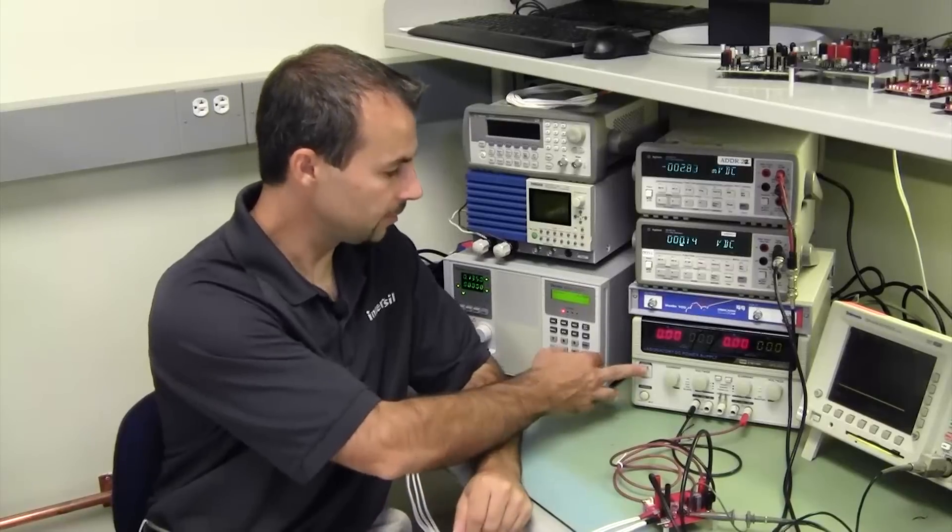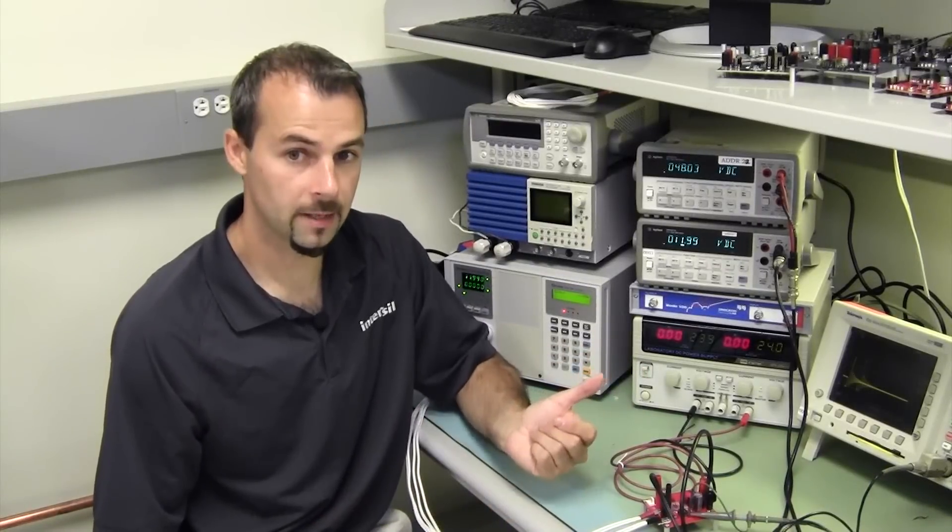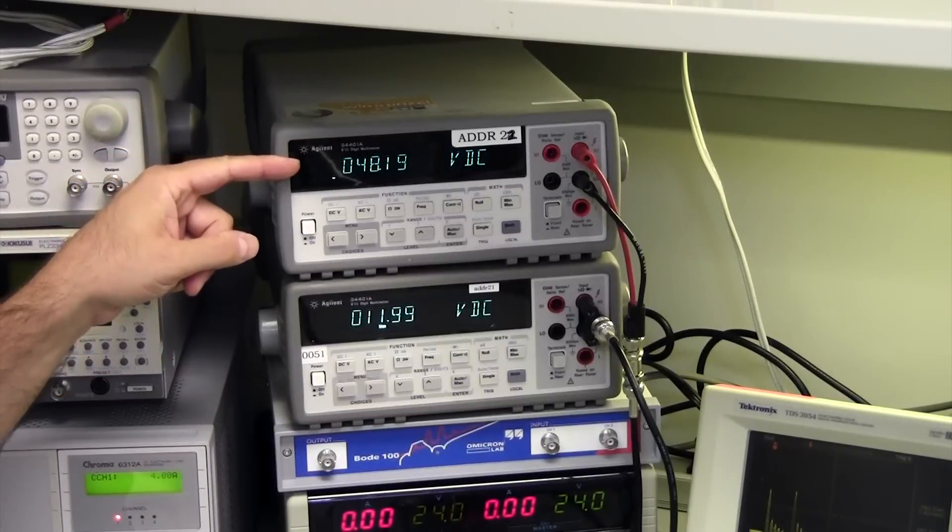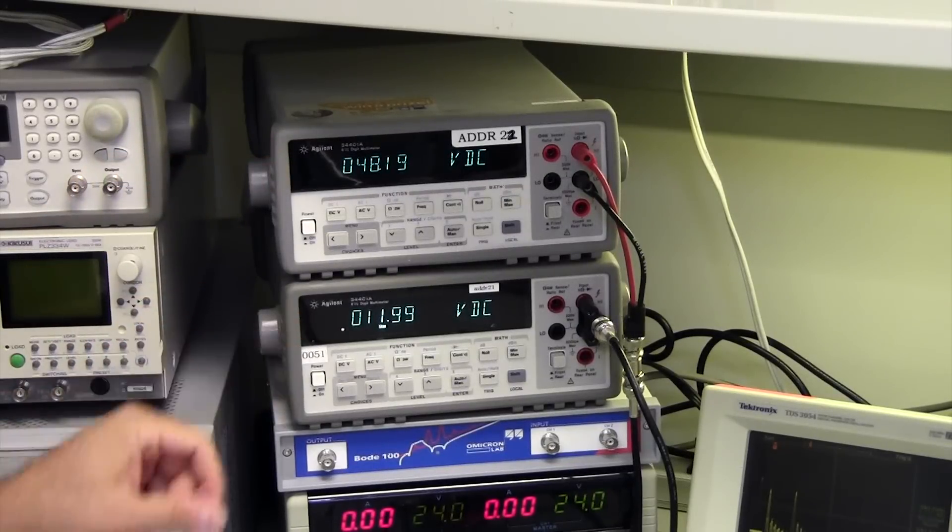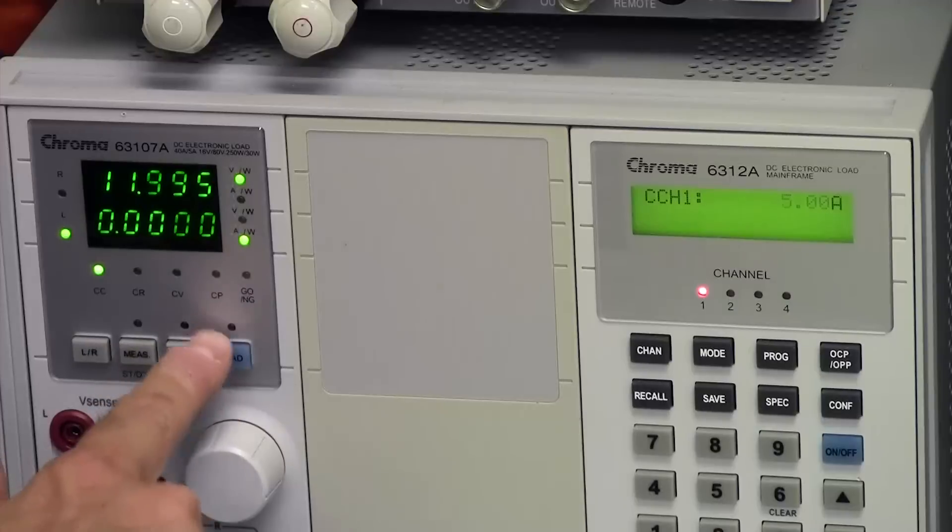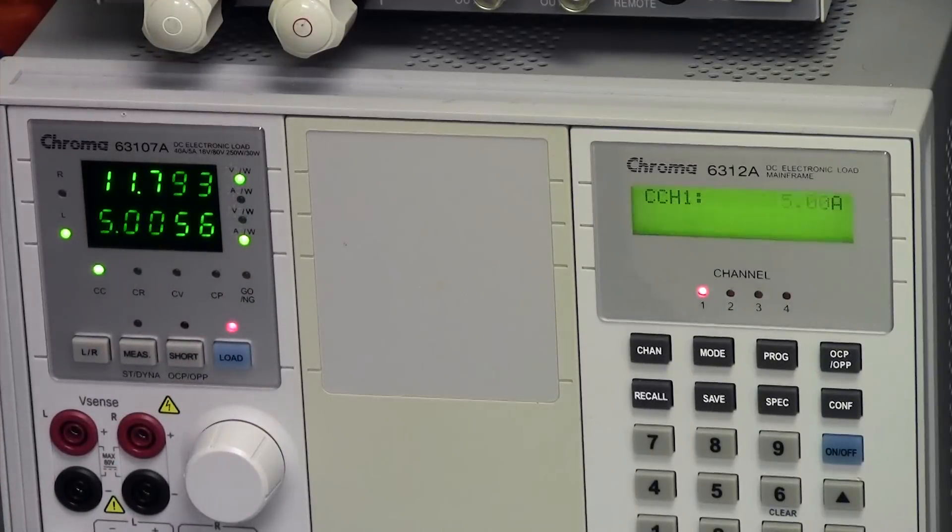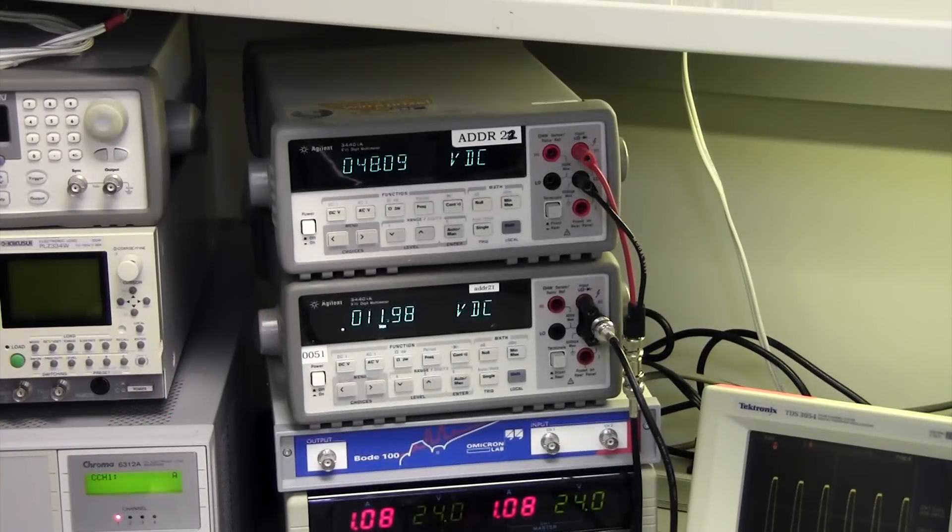Now, if I enable the supply, you can see I've set it up for 48 volts. So I'm regulating 48 volts at the input to 12 volts at the output. Now, if I enable the load, we see that we maintain the 12 volt regulation as you'd expect.